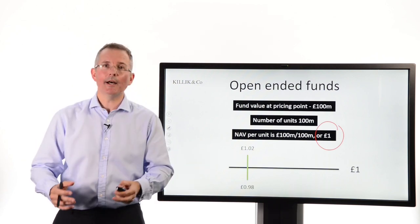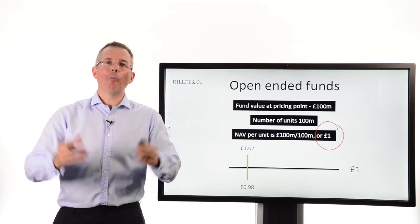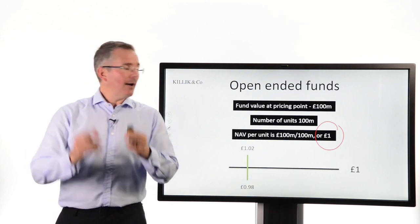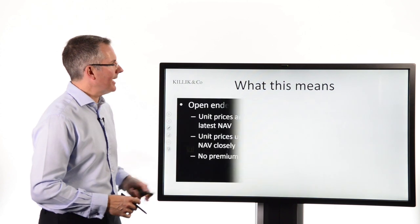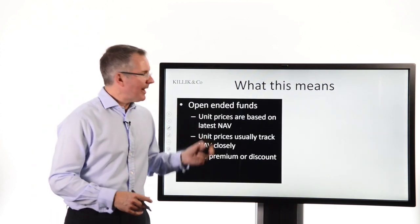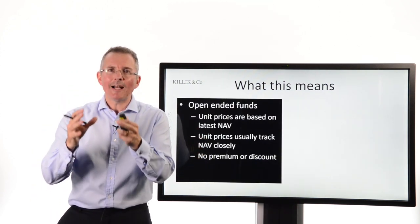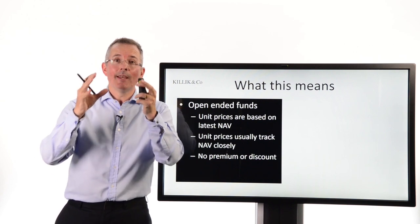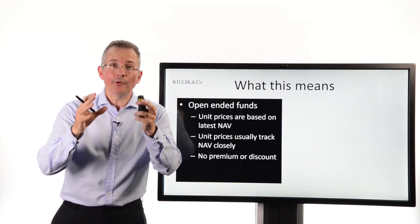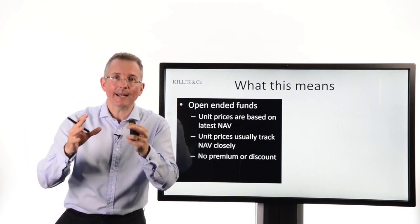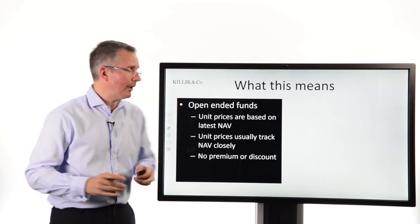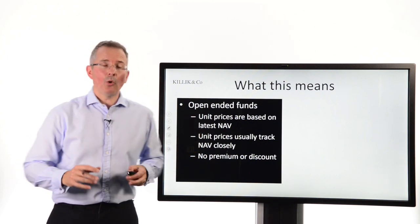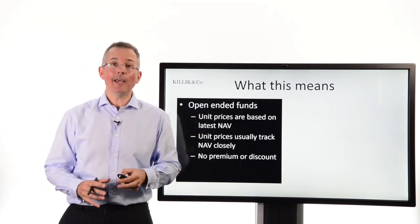So churning units — buying and selling them quickly — doesn't make a lot of sense in many cases, because you're going to suffer that spread straight away. In this example I've made it a 4p spread for illustration. In open-ended funds, your unit values are being driven directly by the NAV of the fund, and changes will be directly mirrored in what your holding is worth. There's no premium or discount with an open-ended vehicle.